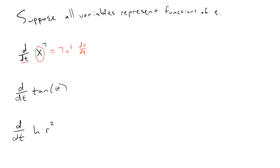For the derivative of tangent theta with respect to t, where theta is a function of time, we get secant squared theta as usual, but then according to the chain rule we multiply by the derivative of the inside function, dθ/dt.